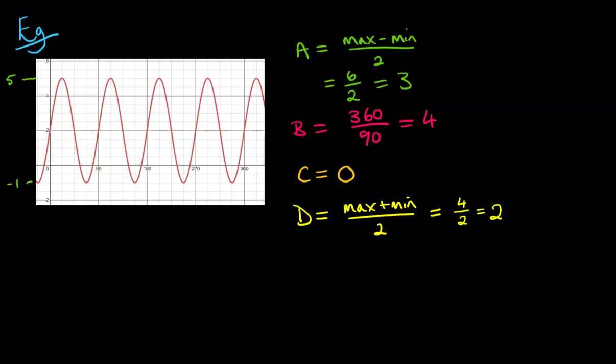Now of those four things, usually this horizontal shift is the one that people find the hardest to work out, and I would actually say leave that one until last. A, B, and D are the three easier ones to do, and maybe you want to leave C until the end when you've worked out the other ones.